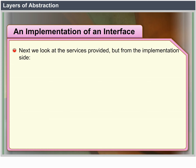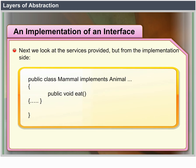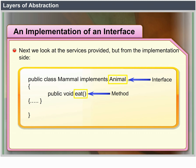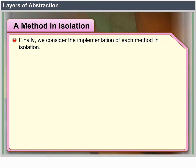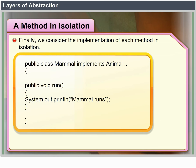An implementation of an interface: Next we look at the services provided from the implementation side. Public class Mammal implements Animal — here Animal is the interface. The concern is with the high-level approach to provide the designated service. Finally, we consider the implementation of each method in isolation: Public class Mammal implements Animal; Public void run; System.out.println.